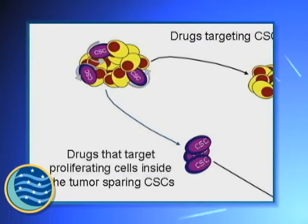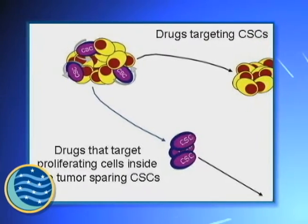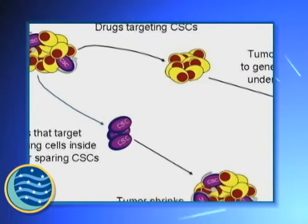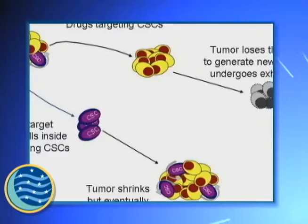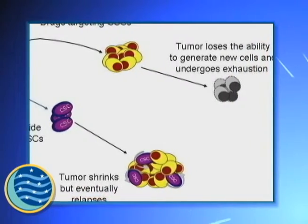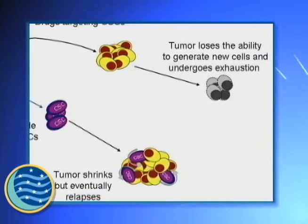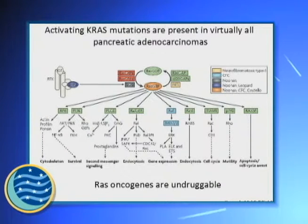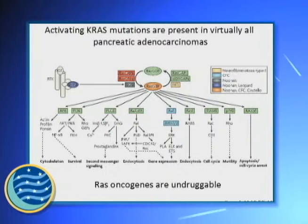Probably this drug would not have a direct effect on the bulk of the tumor, but a tumor losing cancer stem cells also loses the ability to generate new cells. Because we know that activating KRAS mutations are present in all pancreatic adenocarcinoma, it would be very interesting to try to modulate KRAS activity.